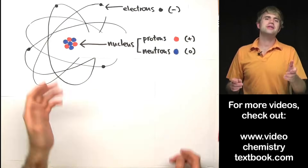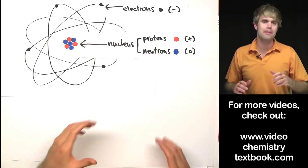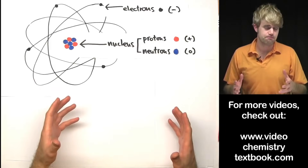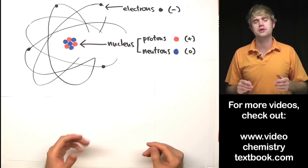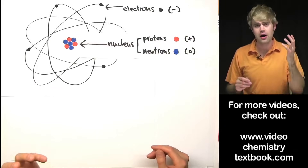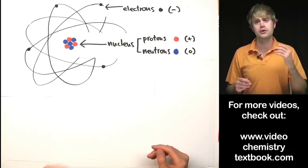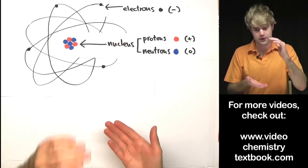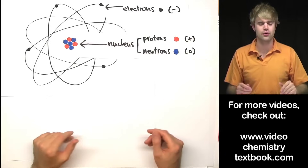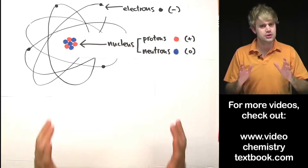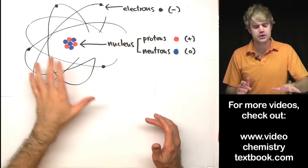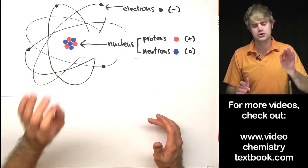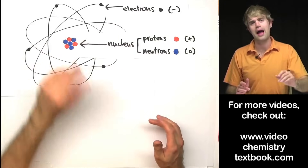If somebody asked you to describe a person, chances are you'd use characteristics like the color of their hair, the color of their eyes, what their height is, and so forth. Just like that, there are characteristics we can use to describe atoms.